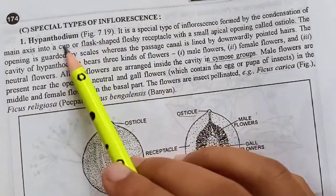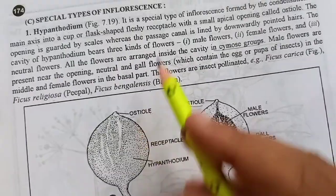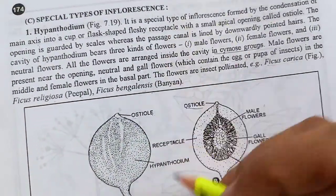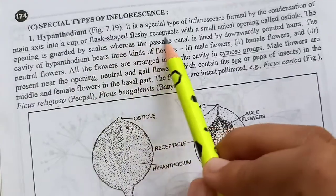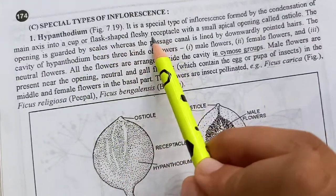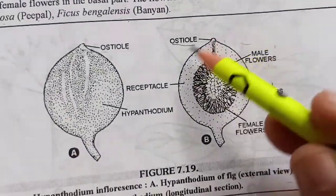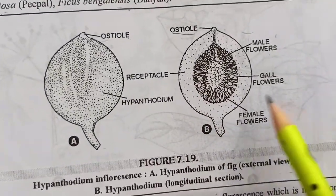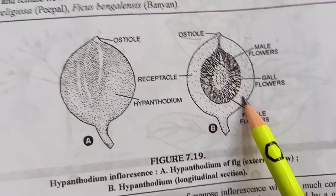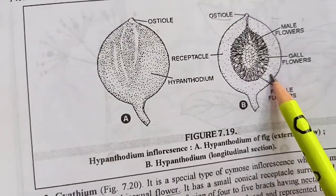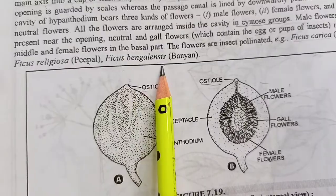Is tarah ka jo inflorescence hai, jo peduncle hai woh end hoti hai into a cup aur flask shape receptacle. Receptacle matlab thalamus — toh jo thalamus hai woh cup ya flask shape ka hota hai. Aur yahan par jo receptacle hai uski ek small opening hoti hai, osteo. This is the diagram of hypanthodium inflorescence, which is a special type of cymose inflorescence. Remember, teen tarah ke flowers hote hain in the cavity of hypanthodium. Example yaad rakhne hain: Ficus carica, Ficus religiosa, Ficus benghalensis.